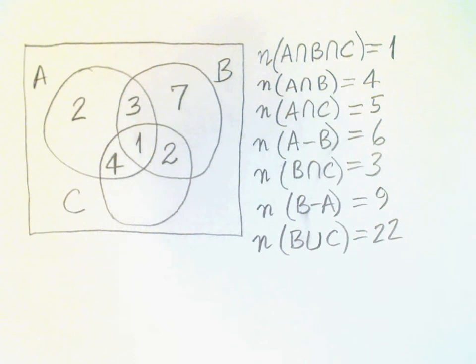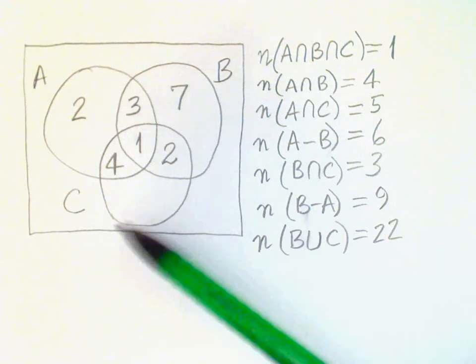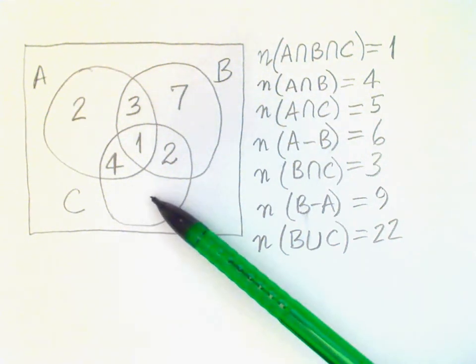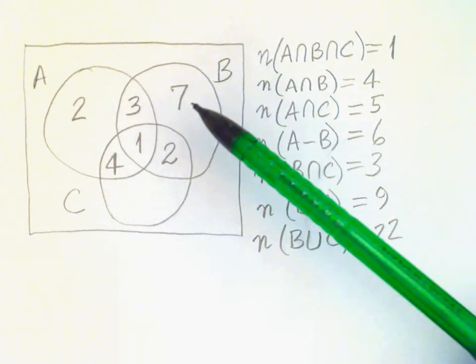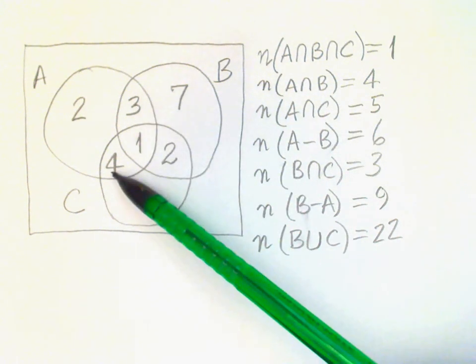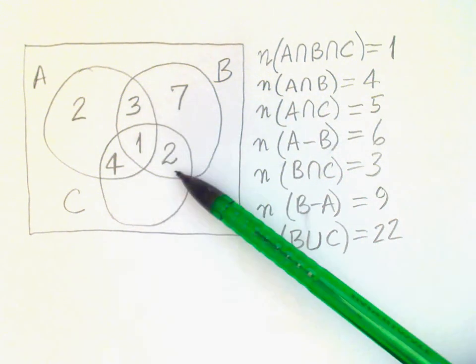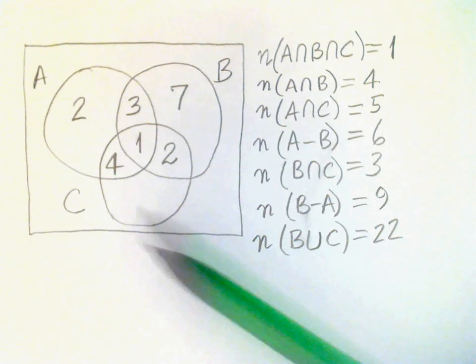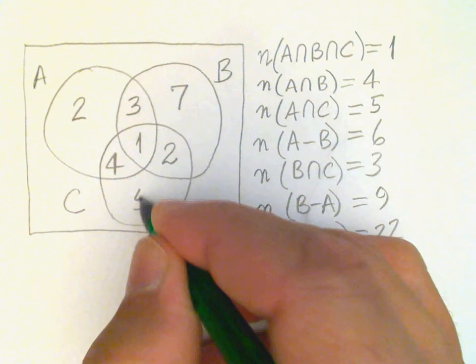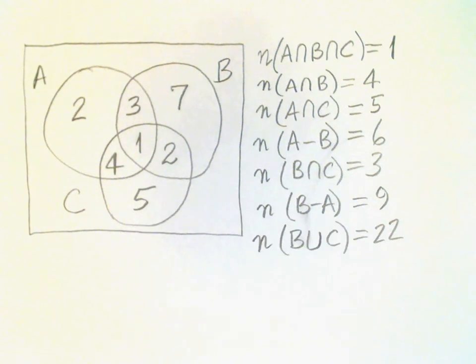Okay, finally B union C is 22. So that means we should be able to work out what's in this region here. Well, B union C, that's all of B and all of C. There's 10, 14, 17. So that means this region here must have 22 minus 17 or 5 elements in it.